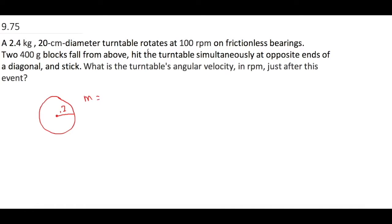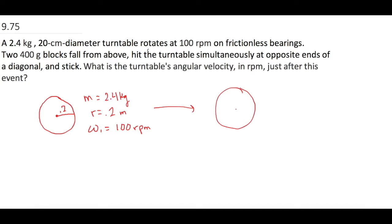So our mass is 2.4 kilograms, our radius is 0.2 meters, and our omega initial is 100 RPM. Normally I would convert this to standard units — radians per second — but I'm going to hold off and show you something in a minute. The turntable has a radius of 0.2, and the two blocks fall from above on the diagonal at exactly opposite ends, so their radii are also 0.2 meters.